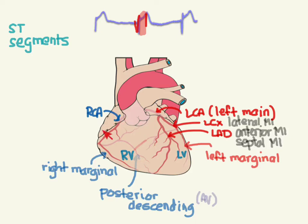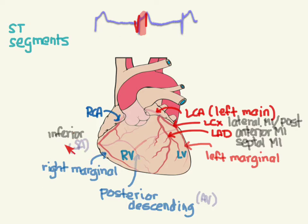An inferior MI is going to be a block of usually the right side, like the RCA. A posterior MI is usually going to be from the circumflex that kind of goes in the back. The AV node gets its blood supply from the posterior descending, and the SA node gets its blood supply from the right coronary artery. So occlusions of these particular arteries can also cause these cells to become ischemic and die and no longer function.